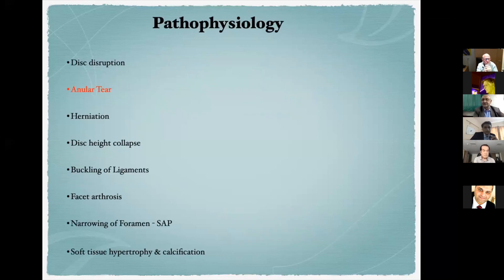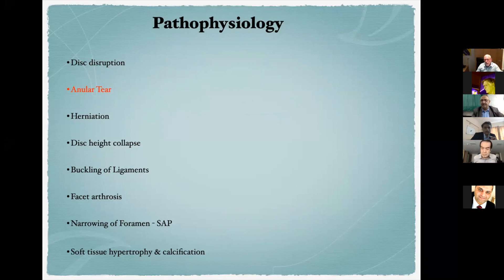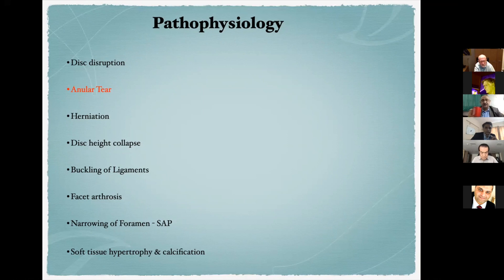The pathophysiology of lumbar spine degeneration starts with internal disc disruption, then annular tear, then herniation, then disc height collapse, buckling of ligaments, facet arthrosis, narrowing of the foramen due to high riding of the superior articular process, and finally soft tissue hypertrophy and calcification — all bringing about stenosis of the exiting route in the foramen and the traversing route in the lateral recess. The annular tear is marked as the main determinant step where it all begins before stenosis symptoms appear.